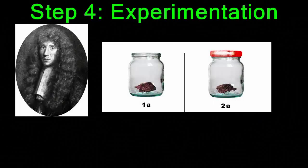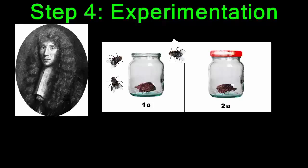Step four is when you actually test your hypothesis by conducting an experiment. In Redi's case, he set up two jars — both had pieces of decaying meat inside. The only difference between the jars is that one had a cover and the other did not. The one with no cover would attract flies to the meat.